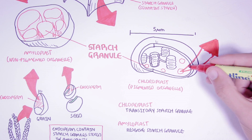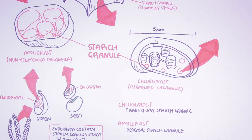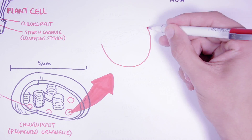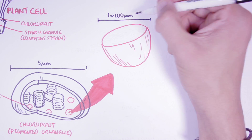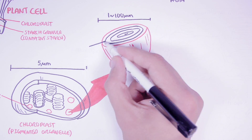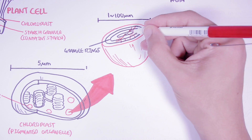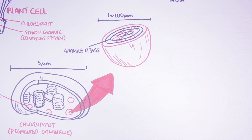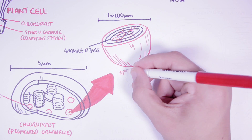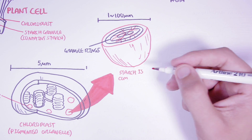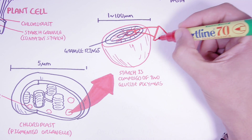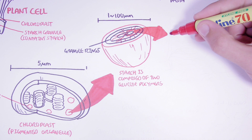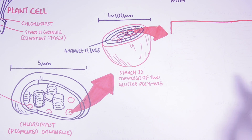Let us zoom into a cross section of a starch granule. The starch granule can vary in size from 1 micrometer to 100 micrometers depending on the plant. Starch granules contain granule rings, and running through these granule rings we find glucose polymers. Starch is made up of two specific glucose polymers.